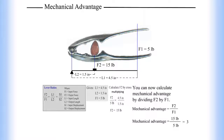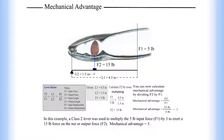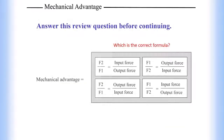15 pounds divided by 5 pounds equals 3. In this example, a class 2 lever was used to multiply the 5-pound input force by 3 to exert a 15-pound force on the nut, or output force. The mechanical advantage equals 3.